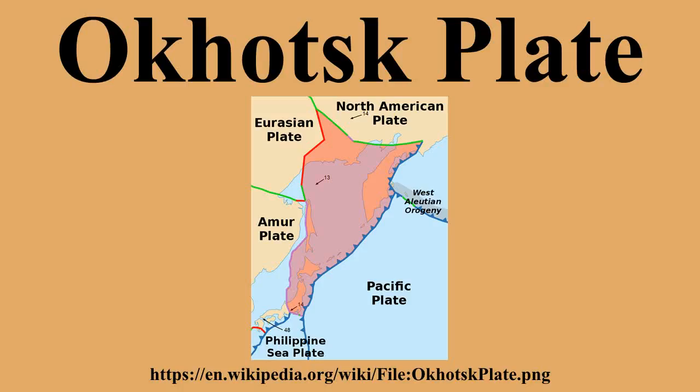The northern boundary is a left-lateral moving transform fault, the Ulakhan Fault. On the east the plate is bounded by the Pacific plate at the Kuril-Kamchatka Trench and the Japan Trench, on the south by the Philippine Sea plate at the Nankai Trough, on the west by the Eurasian plate, and possibly on the southwest by the Amur plate.